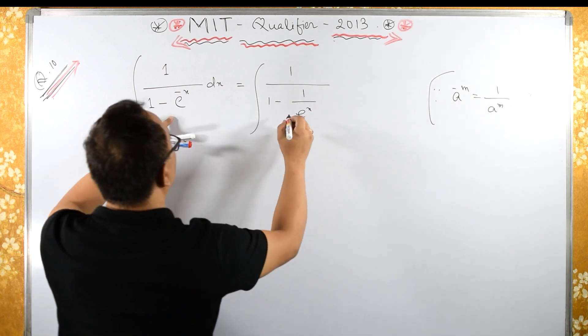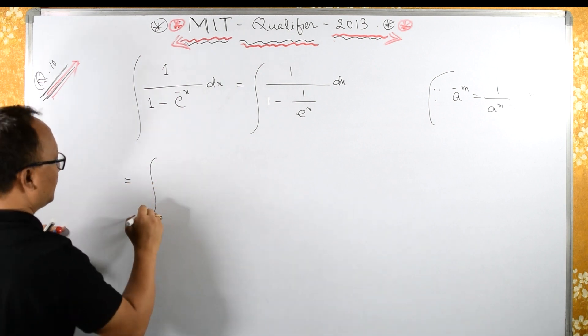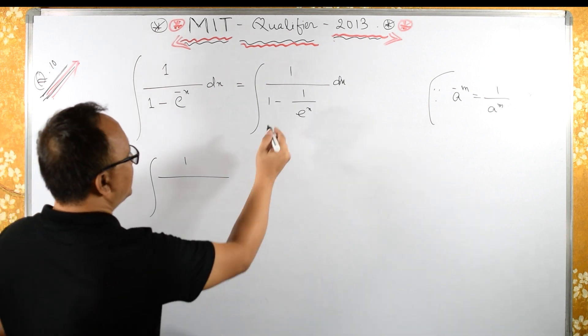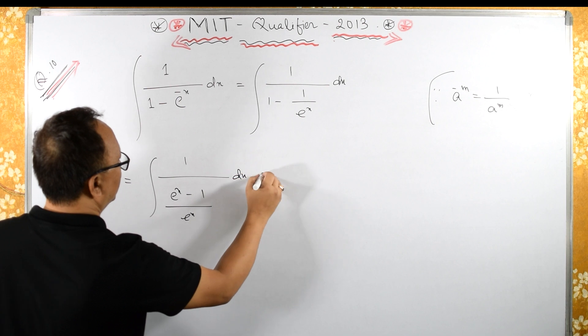I am using this formula dx equals to 1 upon, now let us take LCM. So e raised to x minus 1 upon e raised to x dx.